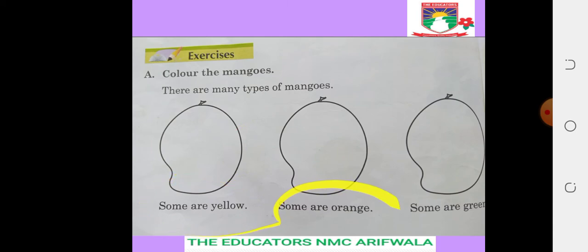Some are yellow, some are orange, some are green. These mangoes are yellow color, these mangoes are orange color, and these mangoes are green color.